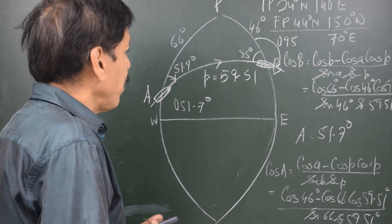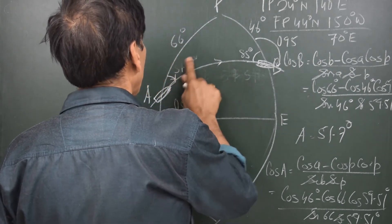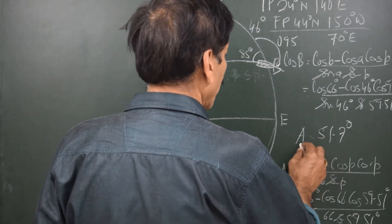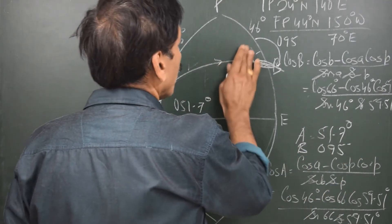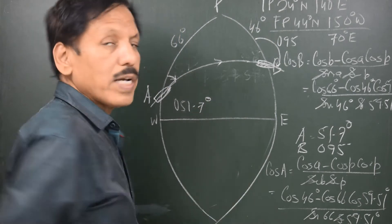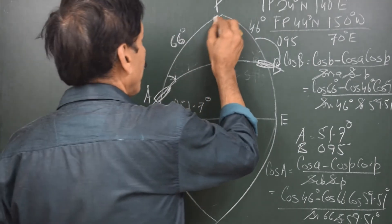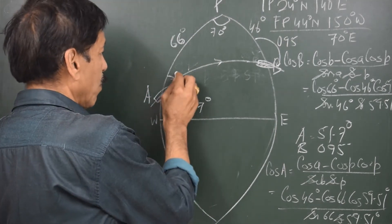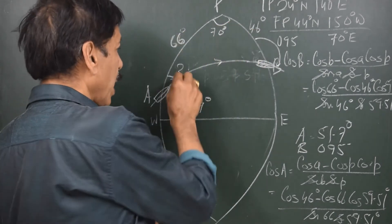Say we don't know the great circle distance and we have to find out the initial course. The initial course is 51.7° and the final course is 0.95°. We know this side as 66°, this angle as 70°, and this side as 46°. We have to find out what this angle is. So we know the three parts in succession and we want the fourth neighbour.